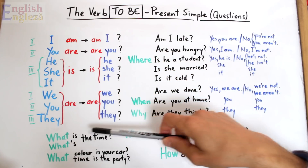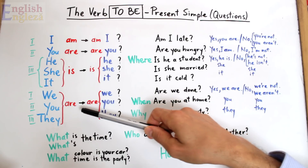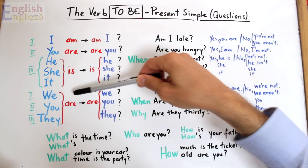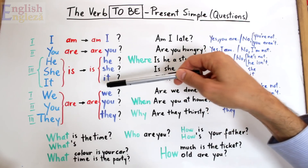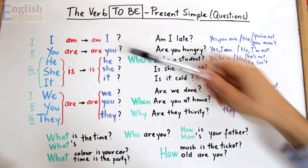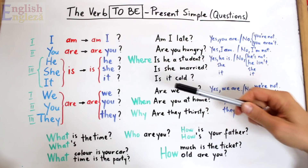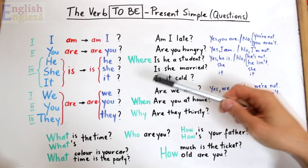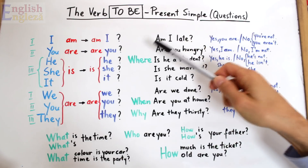Și la fel la toate pronumele de persoana treia singular. La fel și la pronumele de plural, unde forma verbului to be este are. De exemplu, We are, noi suntem — la interogativ avem Are we, suntem noi. Rețineți această regulă a plasării verbului la începutul unei întrebări, pentru că în general așa se formulează întrebările în engleză la toate timpurile verbale. Să vedem și câteva exemple de propoziții cu aceste structuri interrogative.